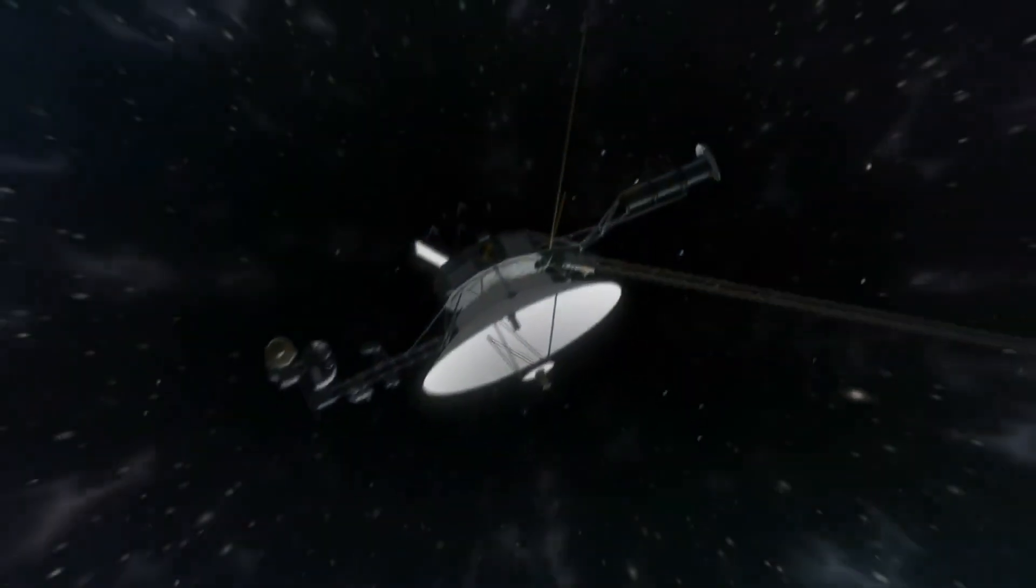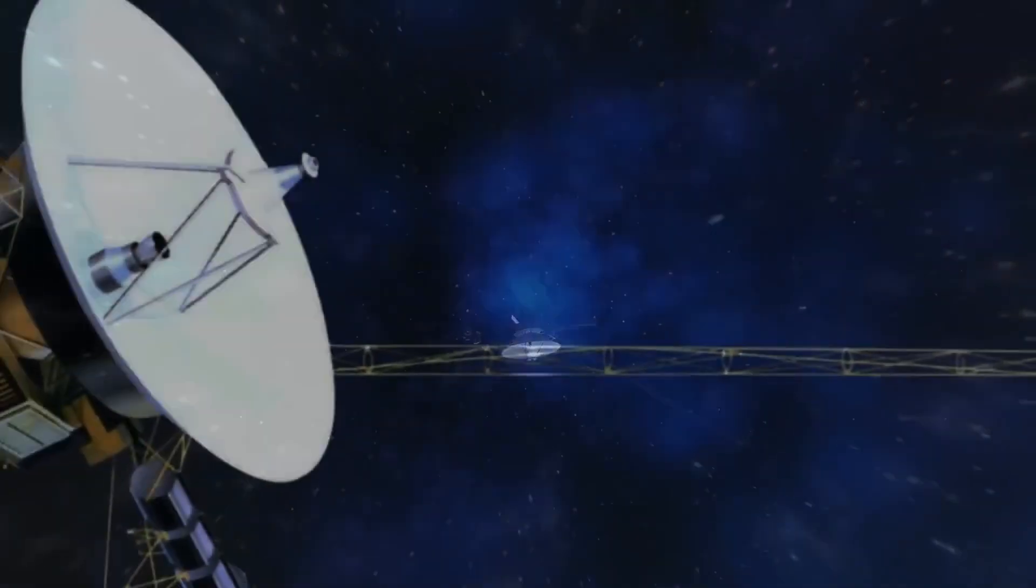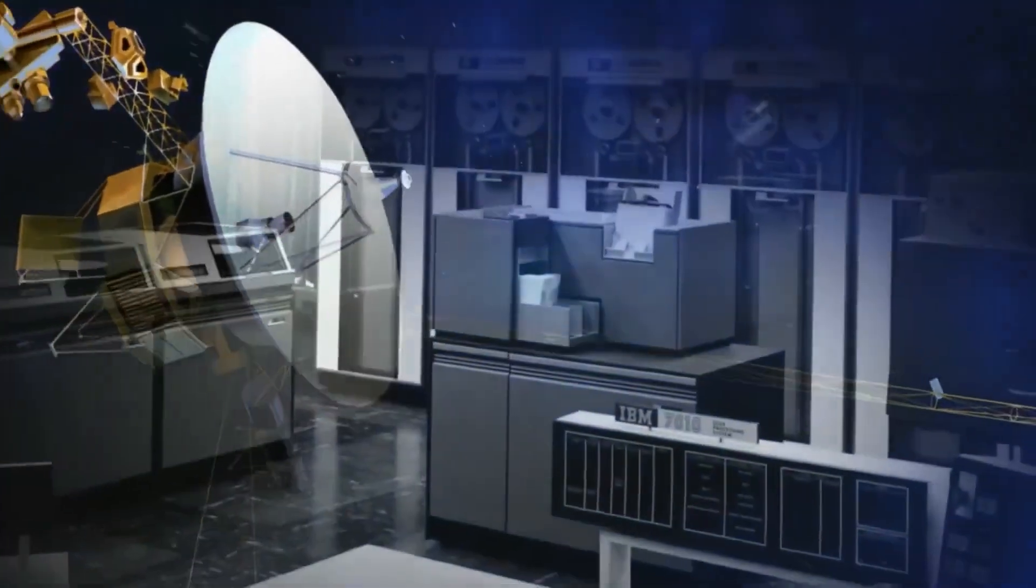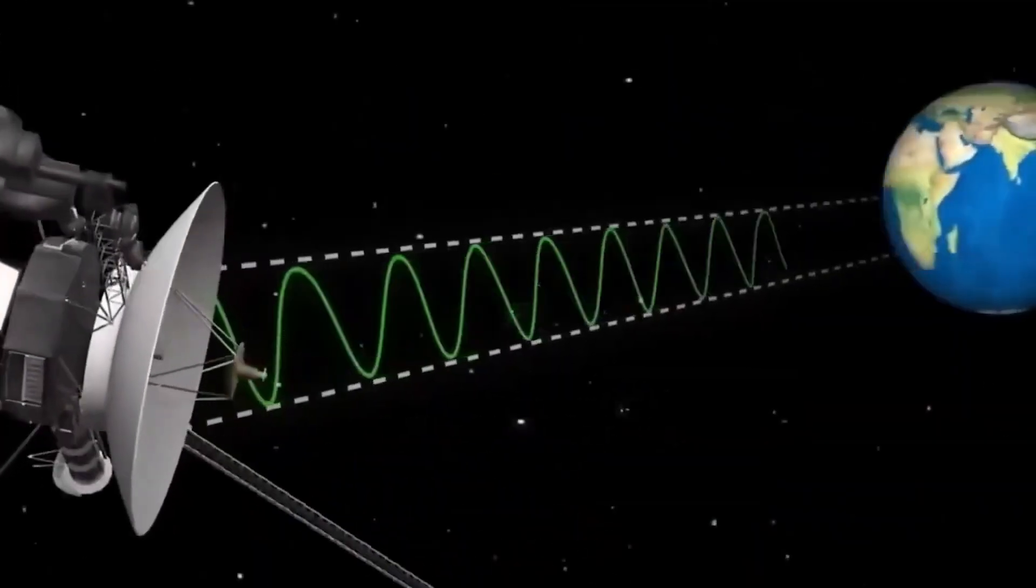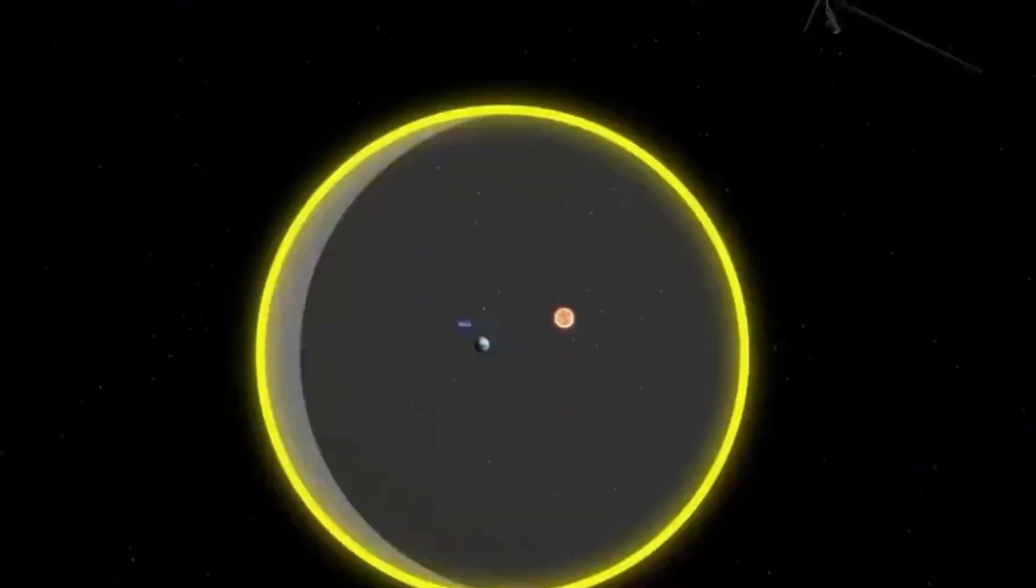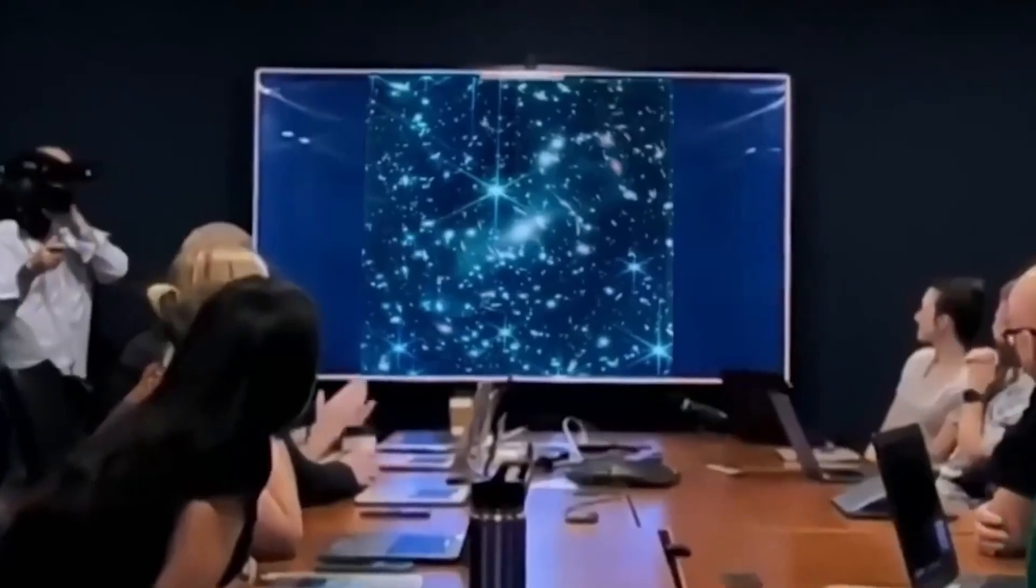Now only 5 instruments remain active. By 2030, that number may drop to zero. But before that happens, Voyager 2 just made a discovery so strange, so precise, so wrong by all traditional logic, that it may rewrite what we know about the outer solar system. Because the edge we thought we knew, the end of our neighborhood, is not the end.